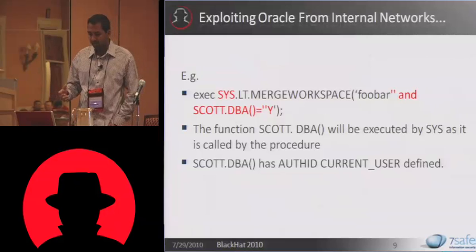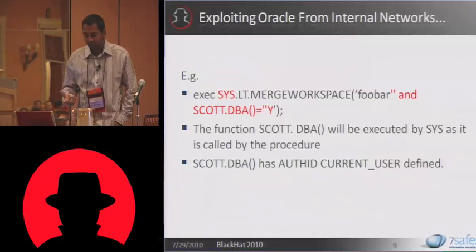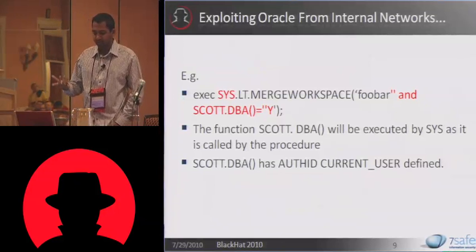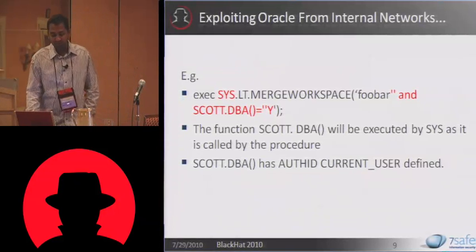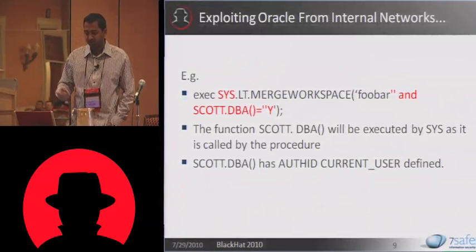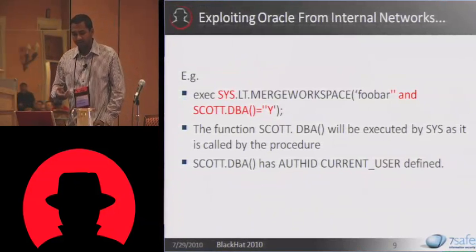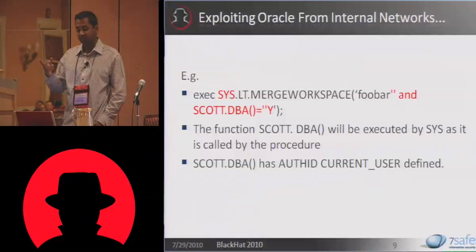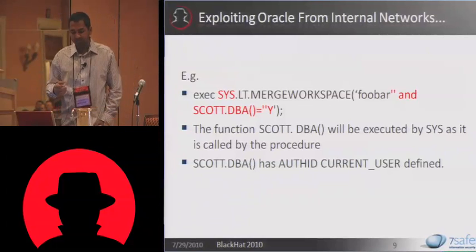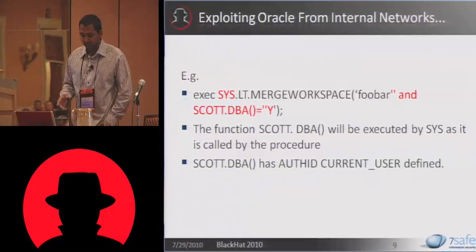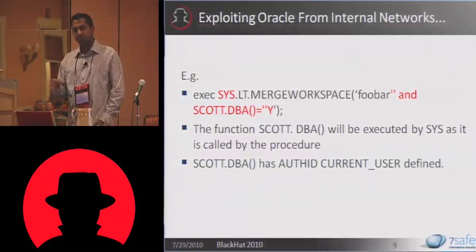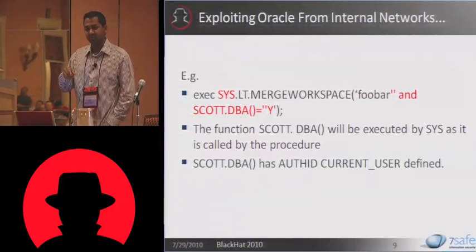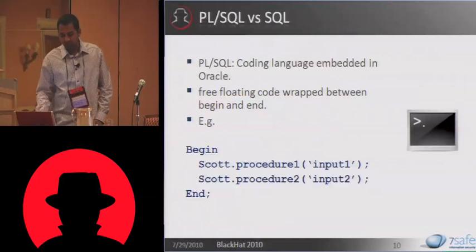Here's an example of exploiting Oracle from internal networks. This particular procedure was patched maybe a year or so ago. It was executable by public. All you do is call the procedure and inject your function — Scott.DBA — and that Scott.DBA function then gets executed with SYS privileges, resulting in the Scott user being granted DBA privileges. What you must remember is that the function created as the Scott user must have AUTHID CURRENT_USER specified. Otherwise it will run with the privileges of the definer and fail. You must specify AUTHID CURRENT_USER while doing this.